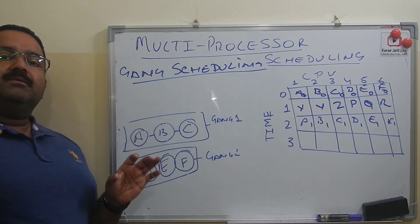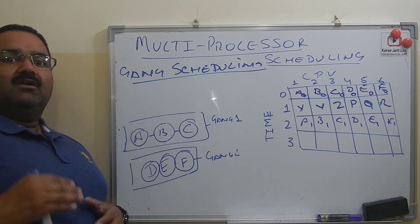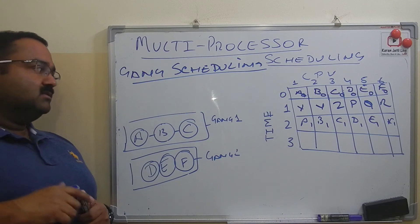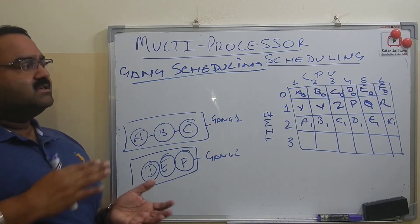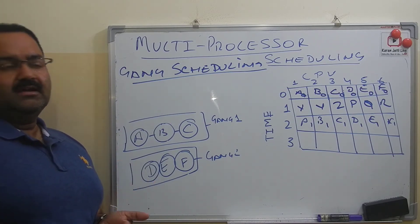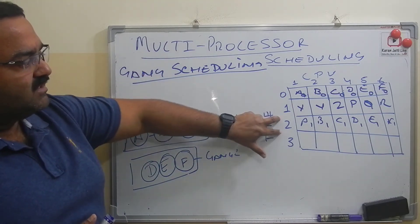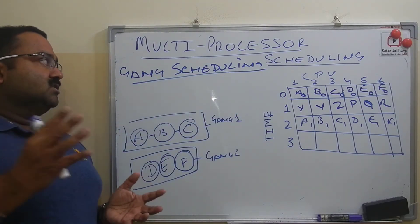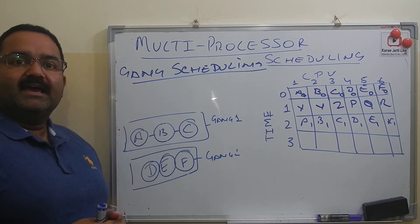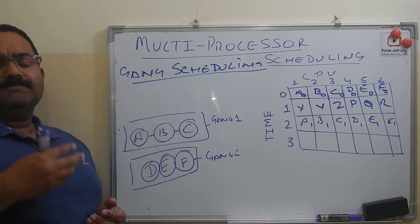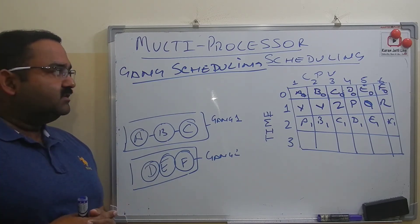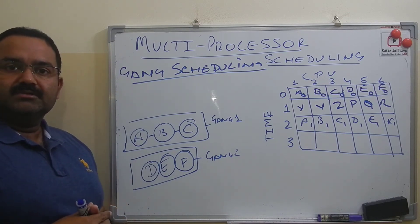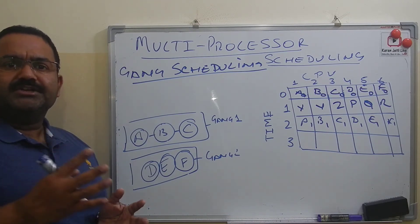Instead of allocating the processor from beginning to end of execution, in gang scheduling we allocate processors to different gangs for a fixed amount of time — we call these time slices. It is similar to round robin scheduling, where processor time is shared between the different gangs. This scheduling is called gang scheduling and it is a huge improvement over space sharing scheduling.